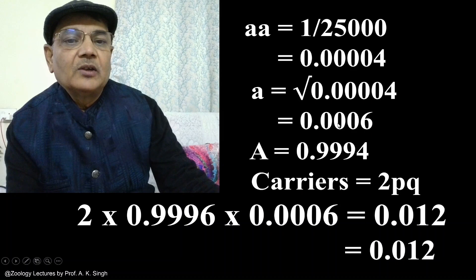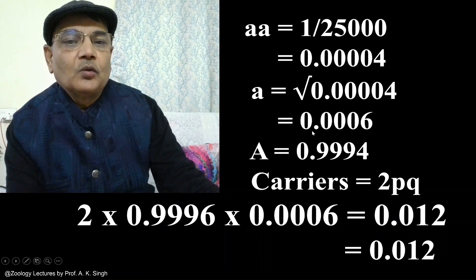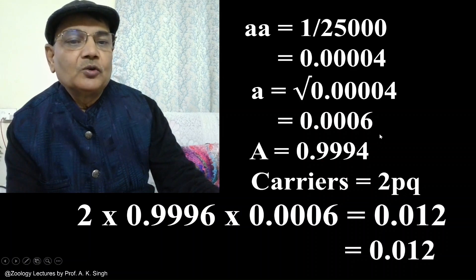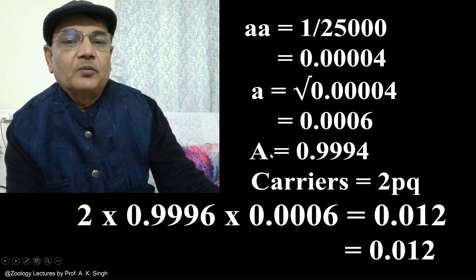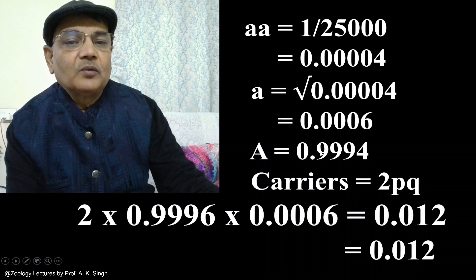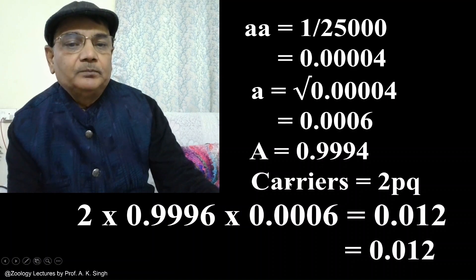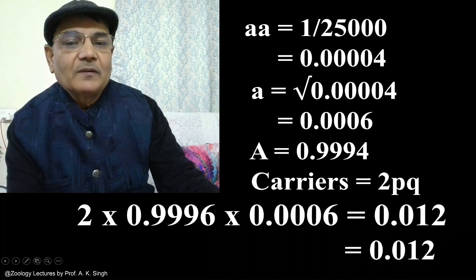So the dominant allele, the normal allele, its frequency will be 0.9994, because the total of these two will have to be 1. We know that p plus q equals 1. So if one allele frequency is 0.0006, the other one will definitely be 0.9994.